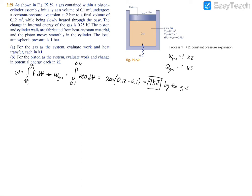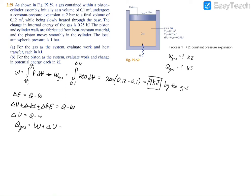To find the heat transfer of the gas we apply the first law of thermodynamics, which states that the change in total energy equals heat transfer minus work. Breaking it down further, the change in internal energy plus the change in kinetic energy plus the change in potential energy equals heat transfer minus work. We can neglect kinetic and potential energy, leaving the change in internal energy equal to heat transfer minus work. Rearranging, heat transfer equals work plus the change in internal energy.